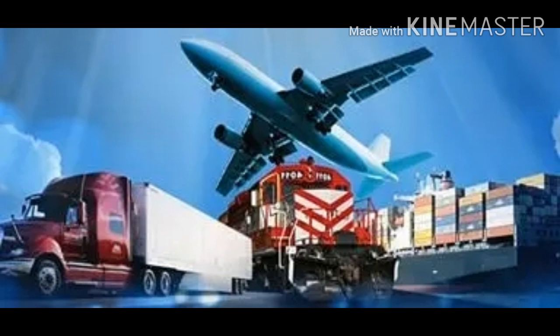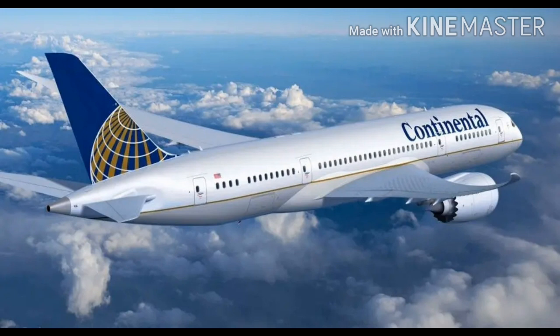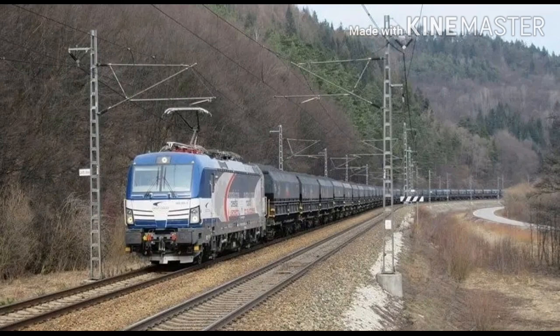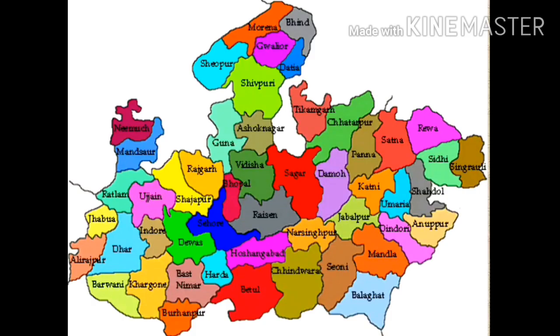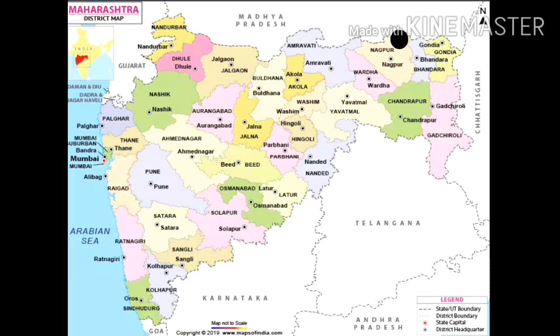Now, as we have learned about various modes of transportation, let us see some examples from page 82 of your textbook to understand which mode of transport would be convenient to use. In the first condition: suppose you have to reach Bhopal from Nagpur in an emergency. Which mode of transport would you use? We would take a flight, because airways are the fastest means of transportation and require minimum time, which is ideal in an emergency.